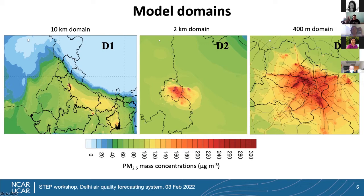Our system currently uses a three-domain setup: the outermost domain covers the northern Indian subcontinent at 10-kilometer resolution, then we zoom into Delhi and surrounding states at 2-kilometer resolution, and finally cover Delhi at 400-meter resolution. In the first phase we developed the system with two domains, and then there was a need to add the third domain.